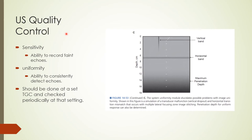Sensitivity and uniformity go hand in hand. Sensitivity is the ability to record faint echoes from deep layers, and can be evaluated while measuring uniformity and penetration depth using the third phantom module. Maximum penetration depth is measured in low-frequency mode by counting visible targets. Uniformity is expected up to the penetration depth; vertical band dropouts and horizontal band transitions are simulated on the image to show the extent of any problems.